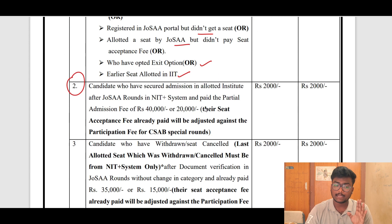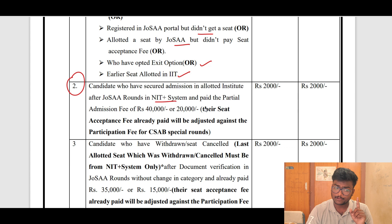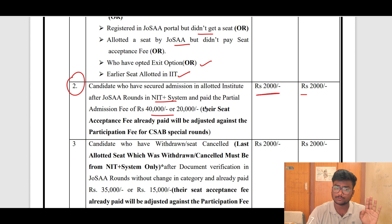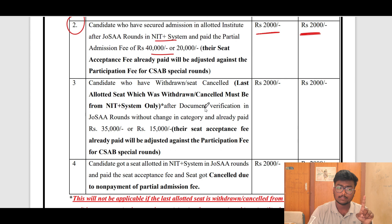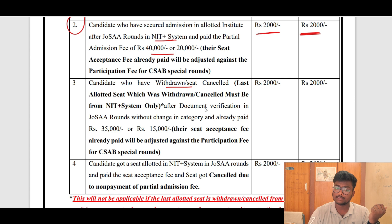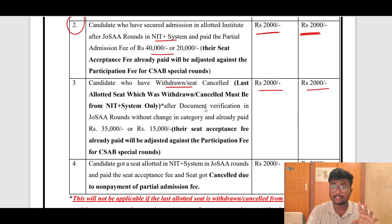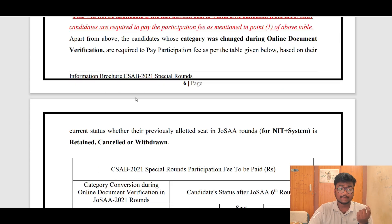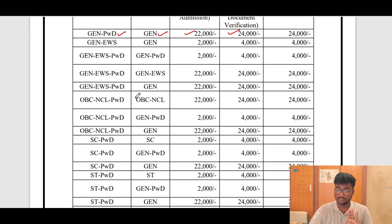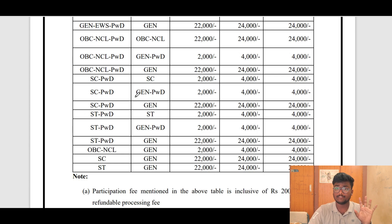Now coming to the second case: those who have secured admission in an allotted seat after JOSA and paid the admission fee of 40,000 or 20,000 — they should pay only 2,000 each, and this amount is non-refundable. Similarly, candidates who have withdrawn or had their seat cancelled in JOSA after document verification, without change in category, and who already paid the seat acceptance fee — they should also pay 2,000. For candidates whose category got changed due to document verification after JOSA, they need to pay according to a separate table — the PDF link will be left in the description.